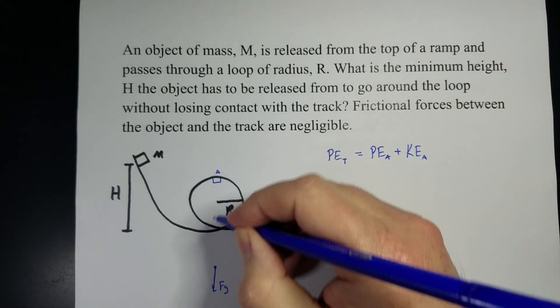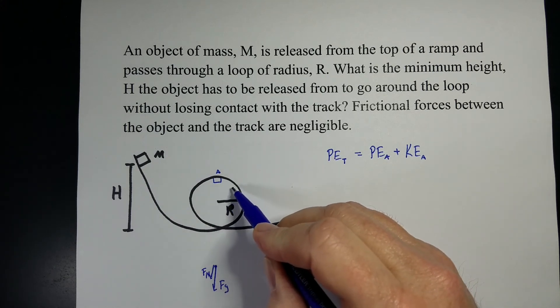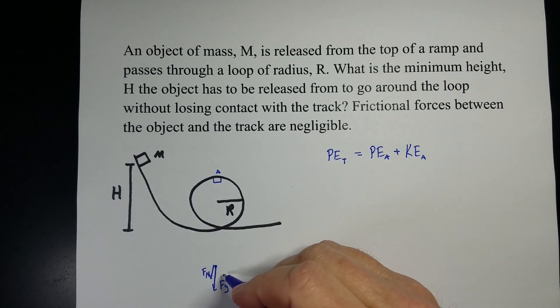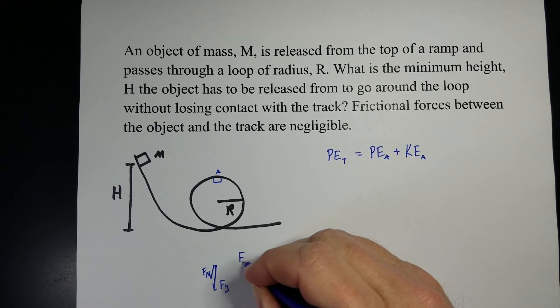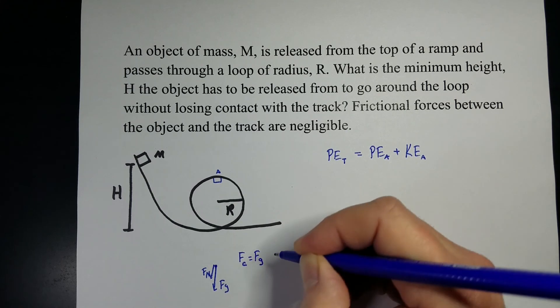Well if it's going really fast, it'll have the weight plus a normal force from the track. But when it's reaching its bare minimum, when it's just barely in contact for that, then the only force that it's experiencing is the weight of the object. So for the minimum, the centripetal force has to be equal to the weight of the object.